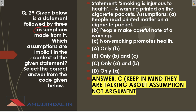Question twenty-nine gives a statement followed by three assumptions. The statement is: 'Smoking is injurious to health' — a warning printed on a cigarette packet. The assumptions given are: people read printed matter on a cigarette packet, people make careful note of a warning, and non-smoking promotes health. The correct answer is only A and B, because the third part is an argument, not an assumption.